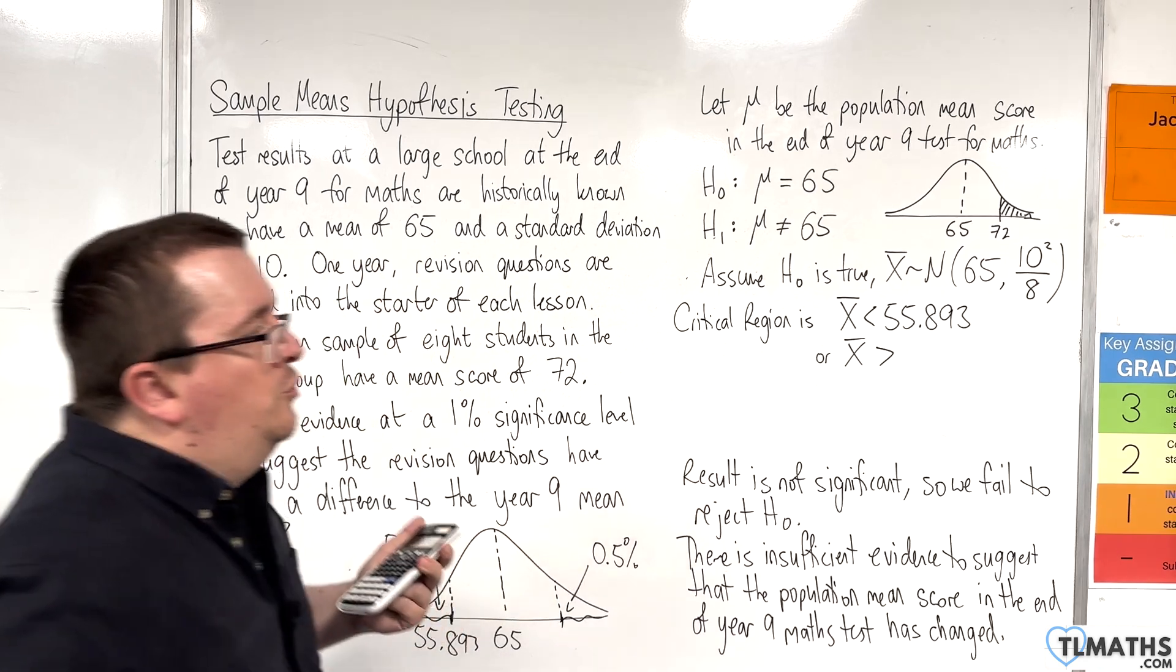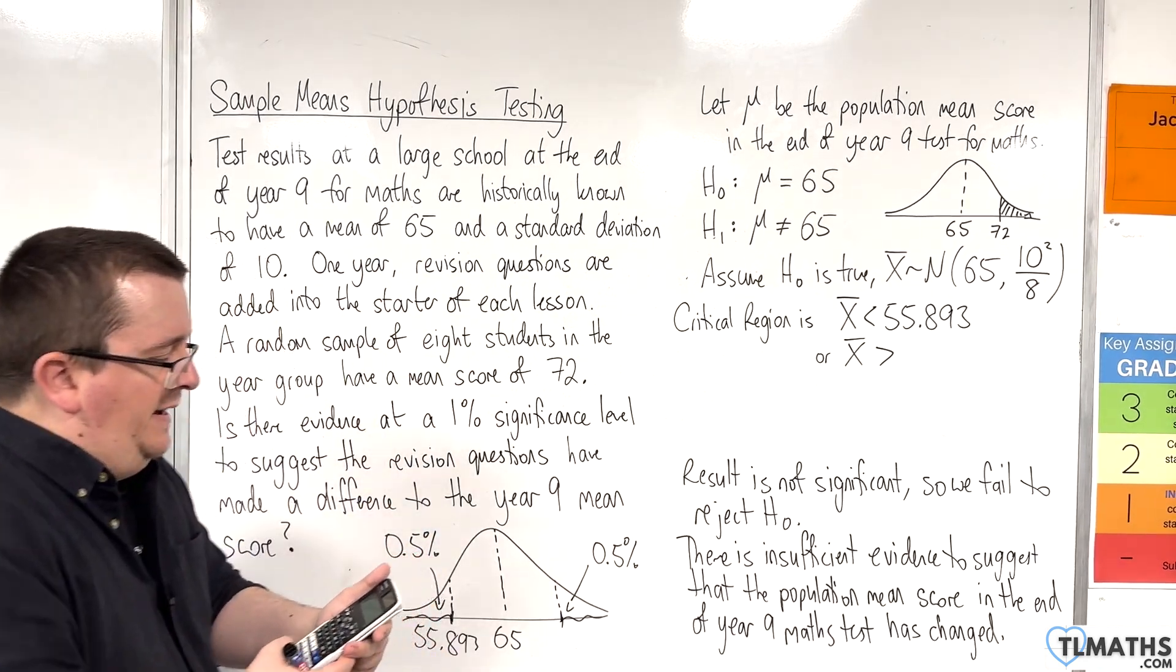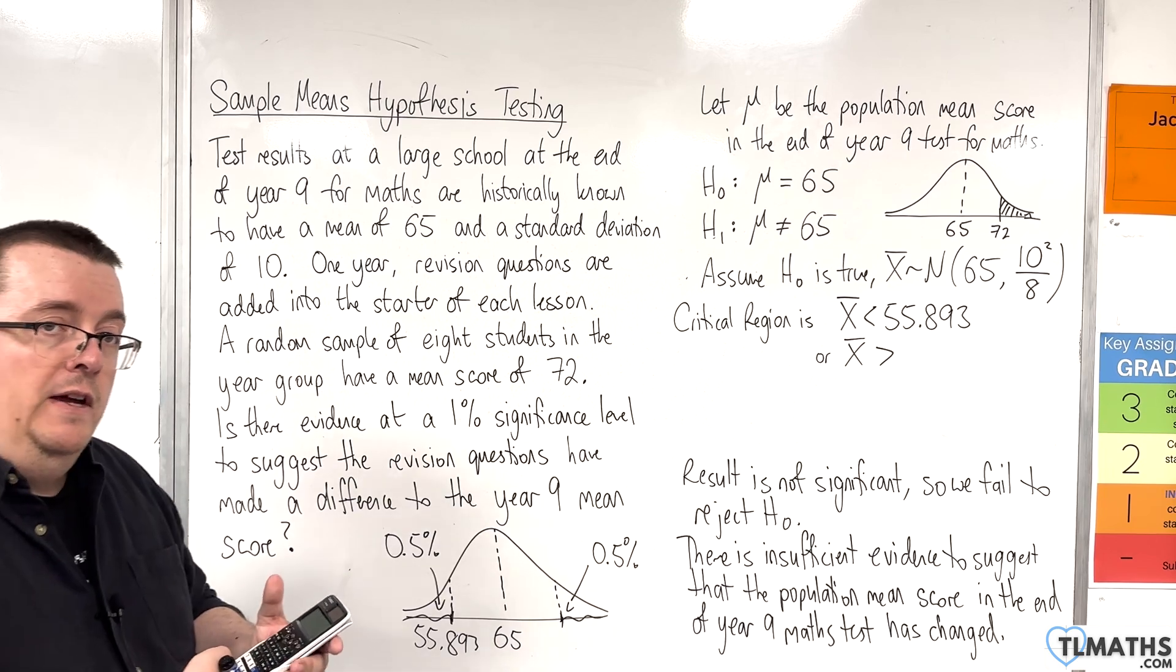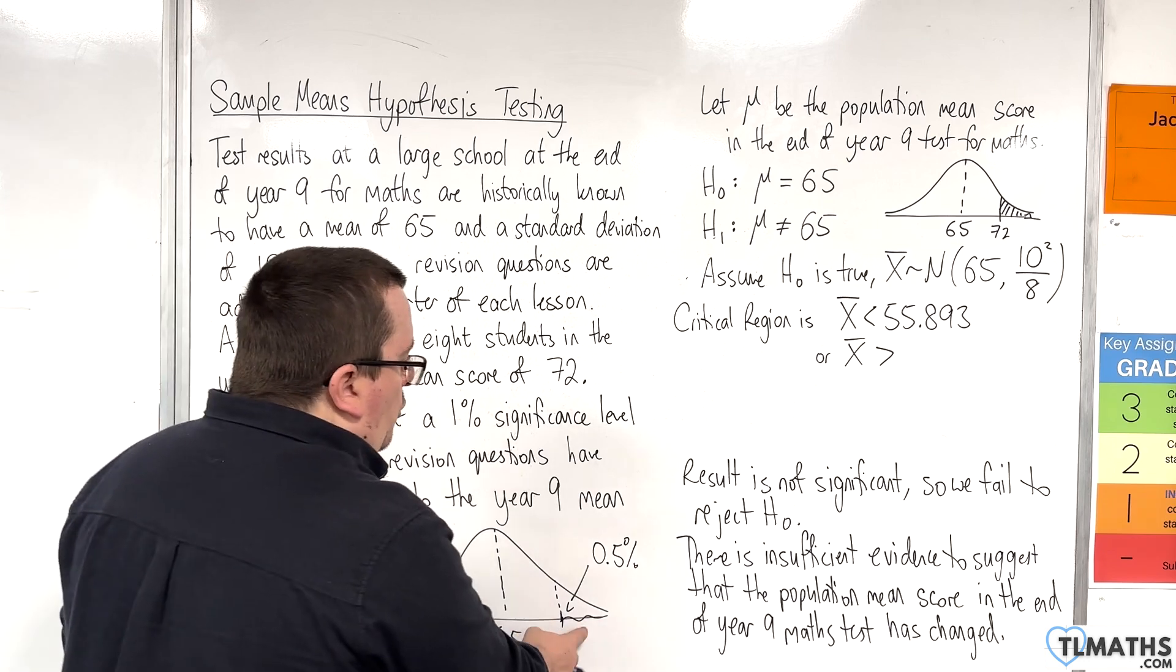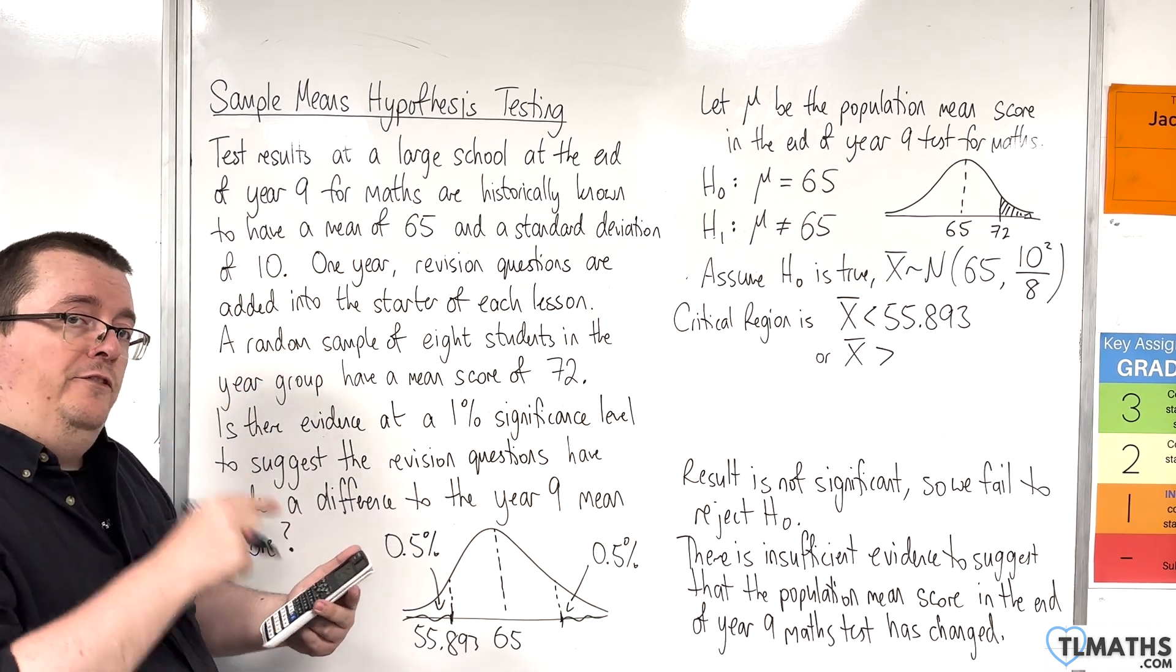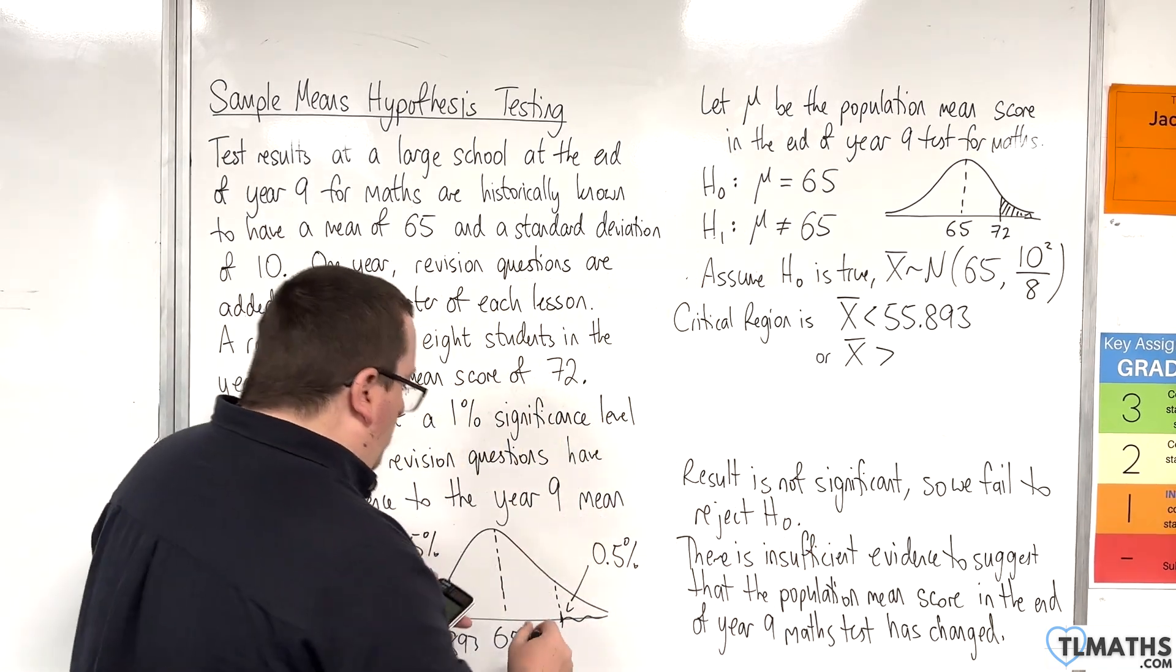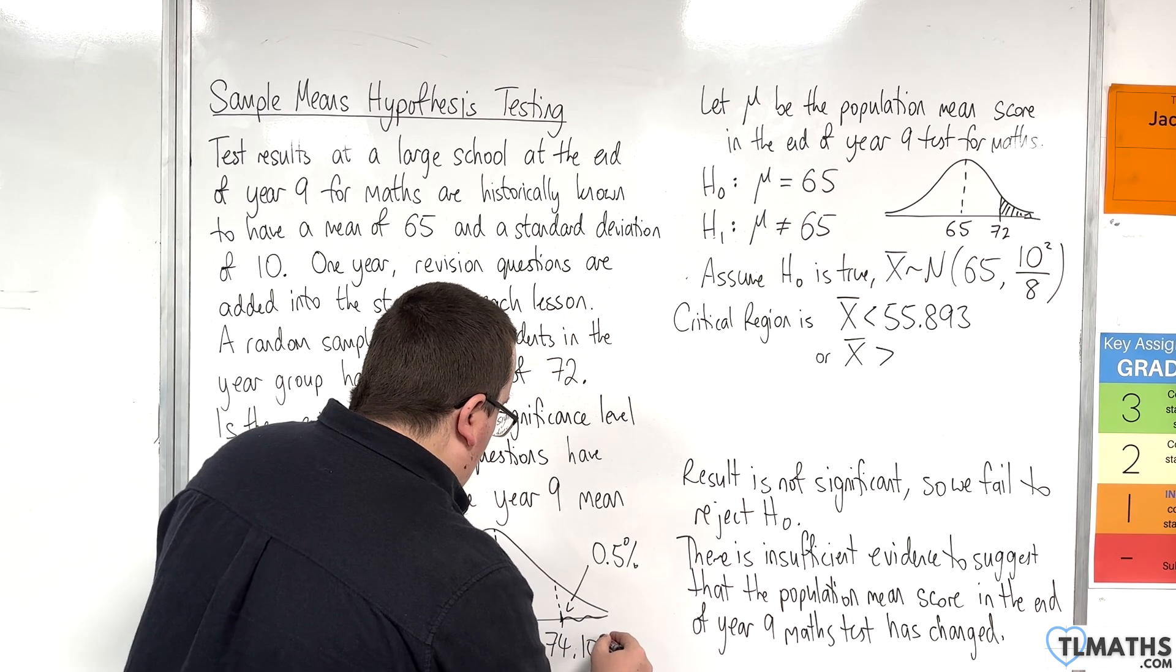Or, the other critical region. So, to get the top tail, I need to change the area to 0.995. Because, remember, inverse normal always looks to the left. And I need 0.5% of the top. So, 0.995 is what I'm putting in as the area.